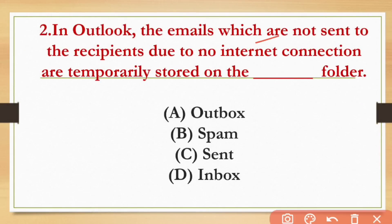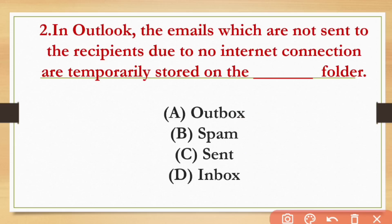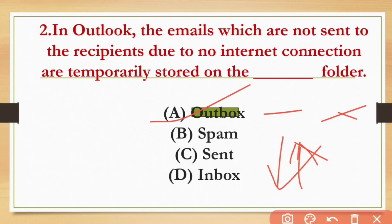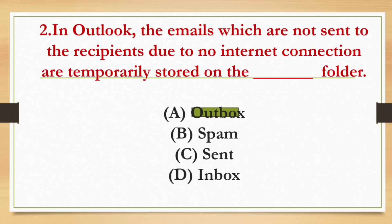In Outlook, the emails which are not sent to the recipient due to no internet connection are temporarily stored in the Outbox folder. The options are Outbox, Perm, Sent, or Inbox. When we compose a mail but don't have the internet, it is saved in the Outbox. The answer is Outbox.